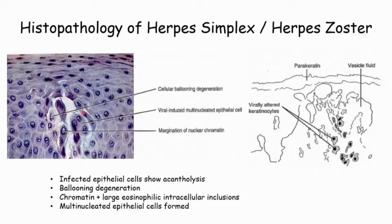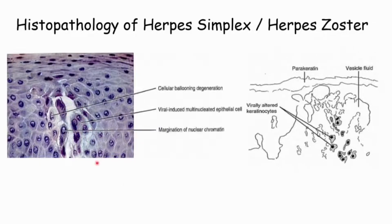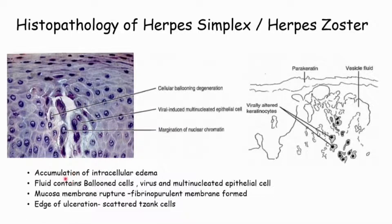Virally induced multinucleated epithelial cells are formed. Accumulation of intercellular edema occurs, and the edema is filled with a fluid which contains numerous ballooned cells, virus particles, as well as multinucleated epithelial cells.